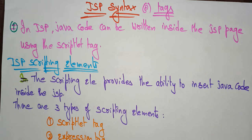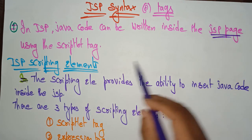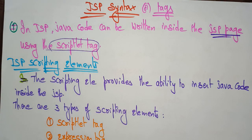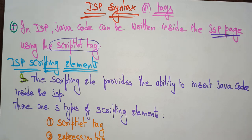In Java Server Pages, Java code can be written inside the JSP pages using the scriptlet tags. You already know how to write Java code, but in which place do you insert these JSP files? You have to create JSP files separately and call those files in the Java code or in HTML.